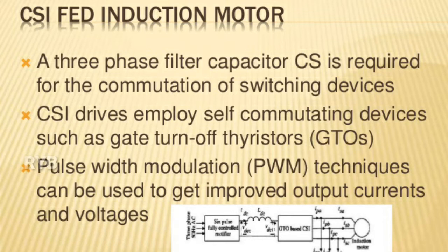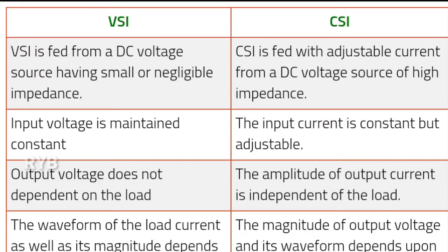Applications include UPS, induction heating, and static VAR compensators. The following table gives a comparative study between CSI and VSI. VSI is fed from a DC voltage source having small or negligible impedance, whereas CSI is fed with adjustable current from a DC voltage source of high impedance.